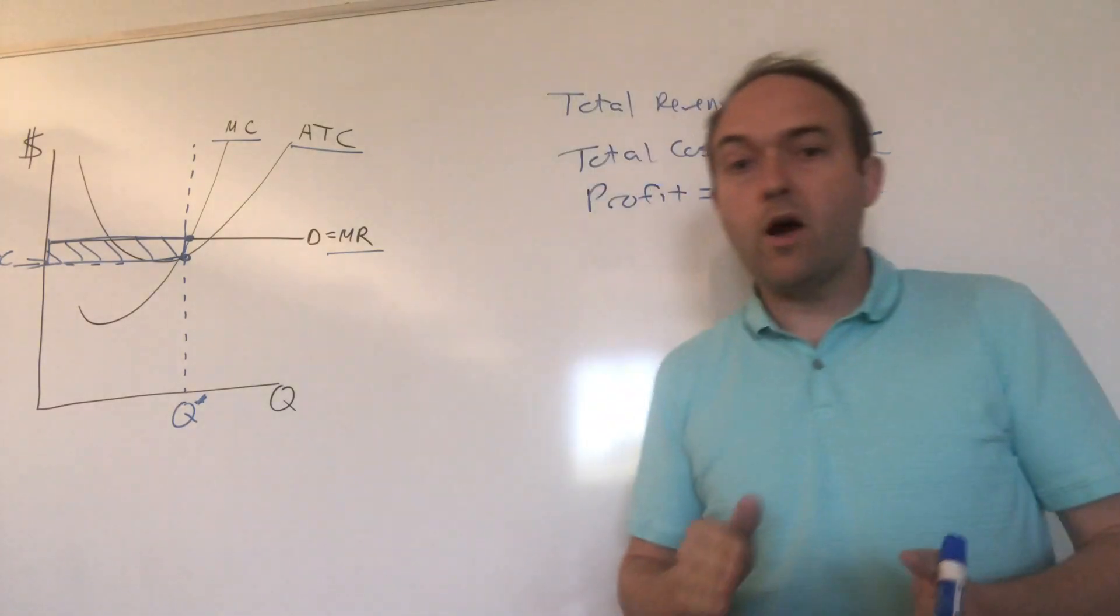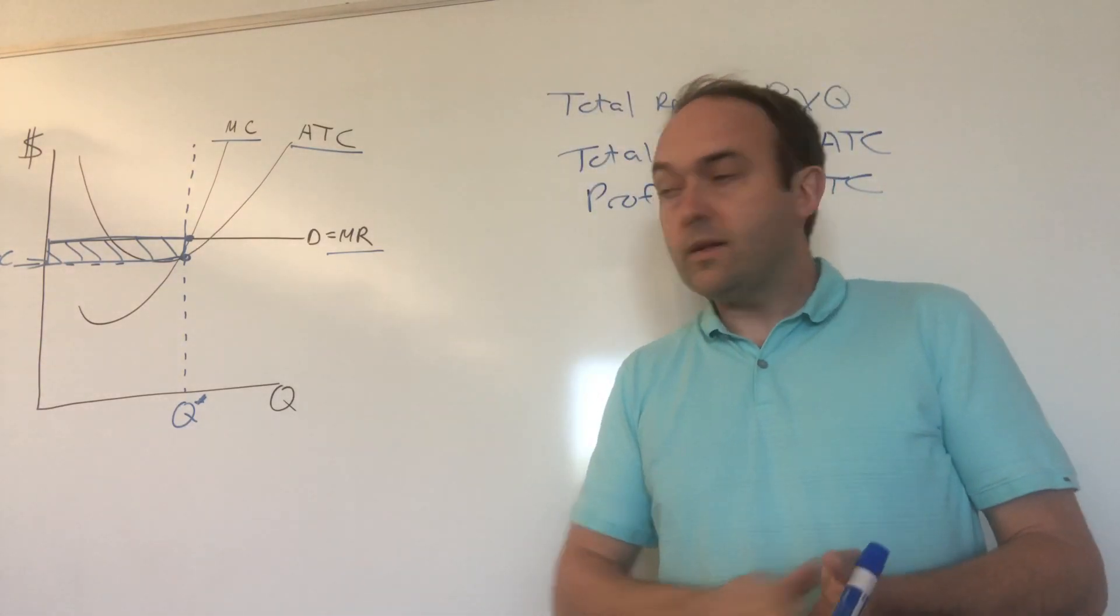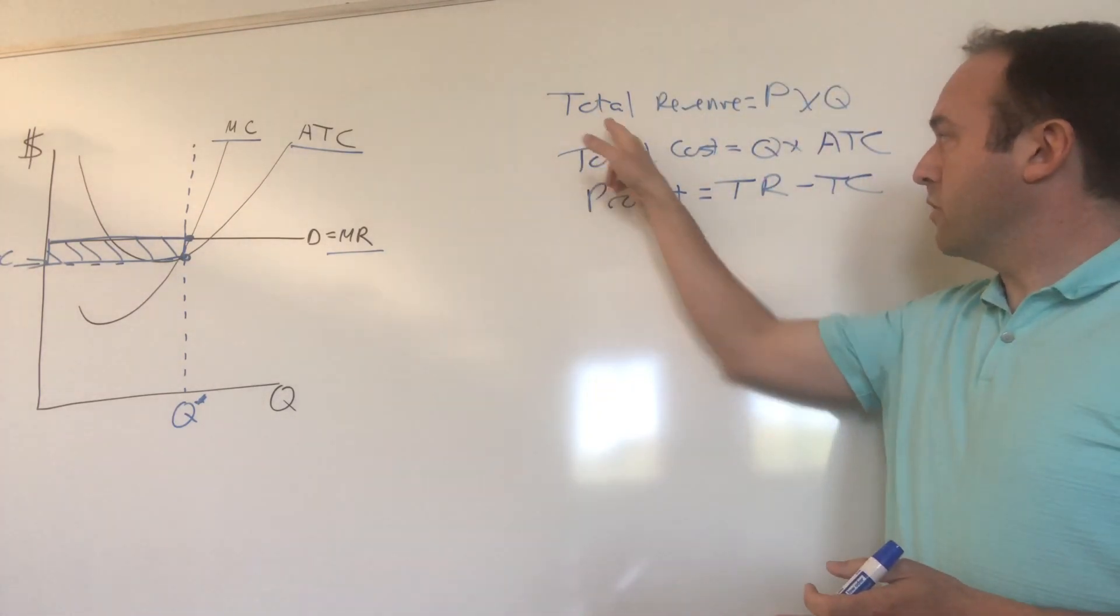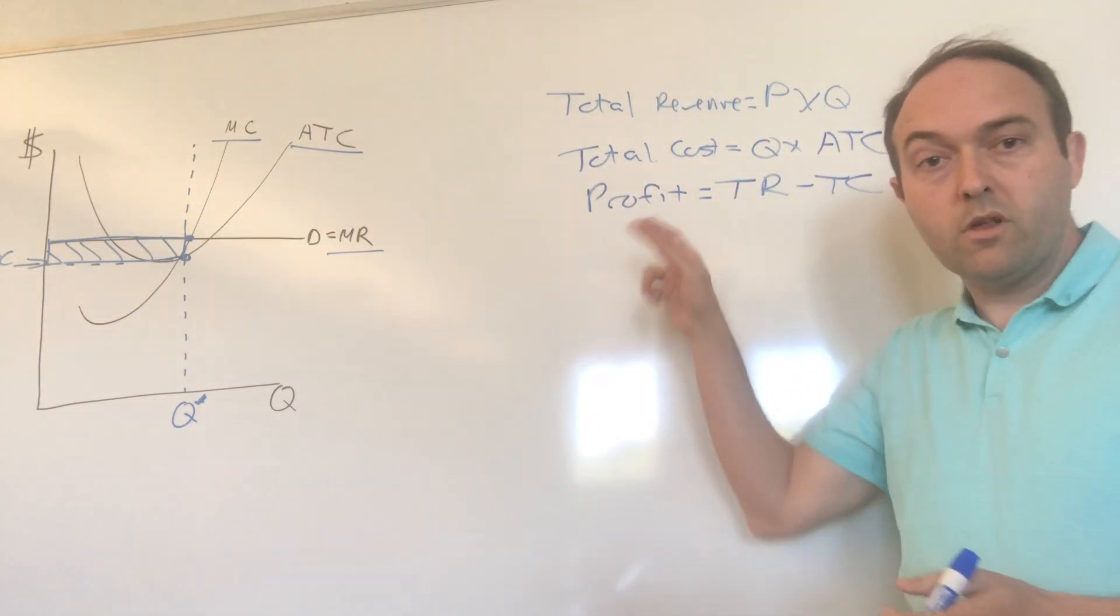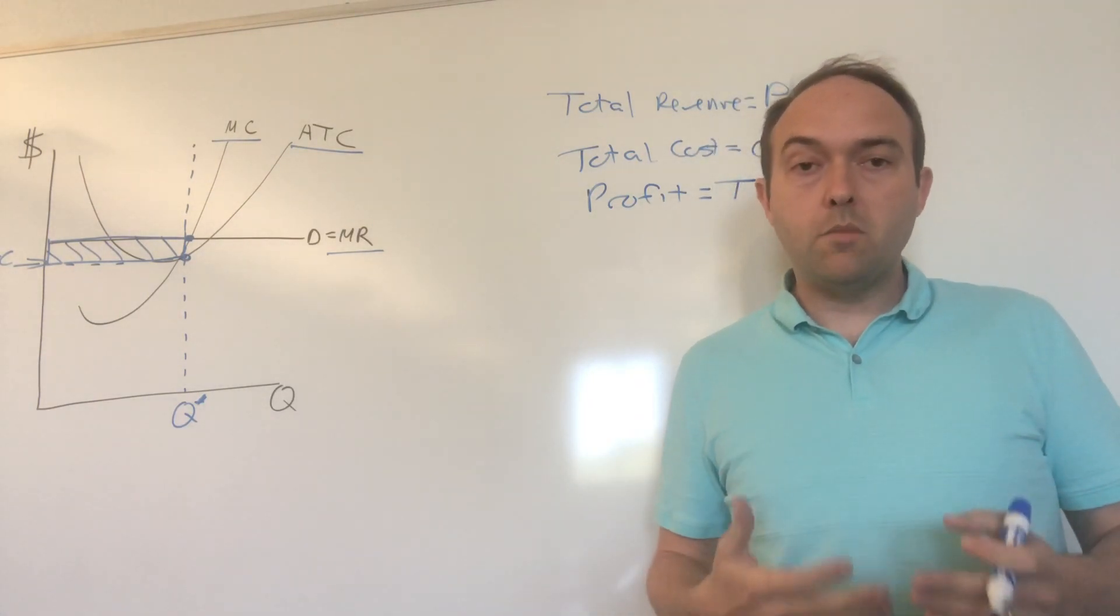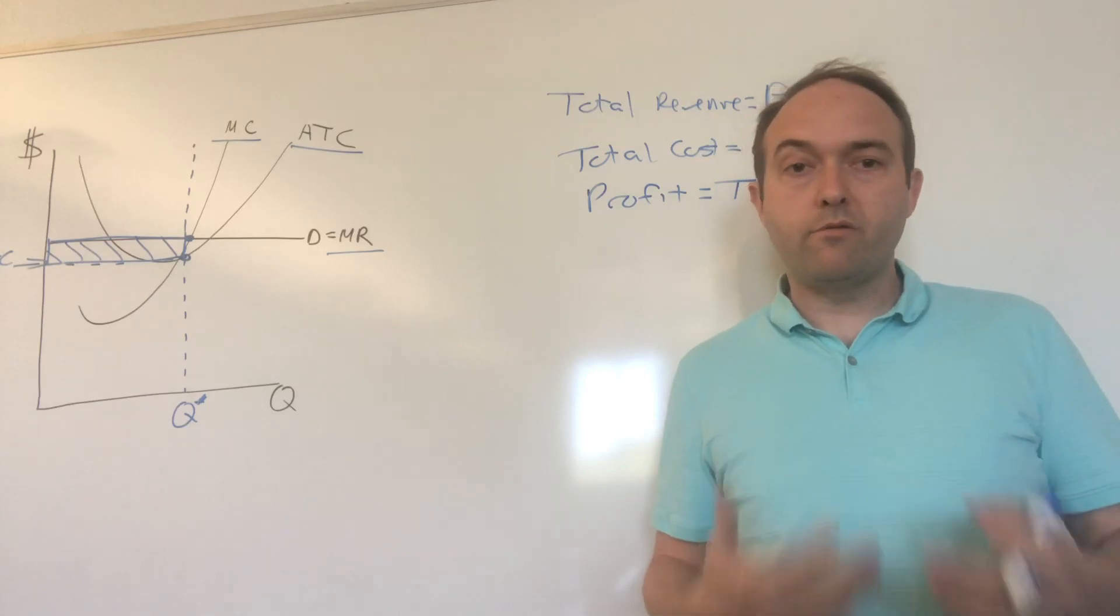You can do all those things. You can find your optimal quantity and ATC on the graph, then use those numbers to plug them in to get your total revenue, total cost, and ultimately calculate your profit. You've done all the basic things we're looking for in this chapter for analyzing the behavior of a perfectly competitive firm. Thank you.